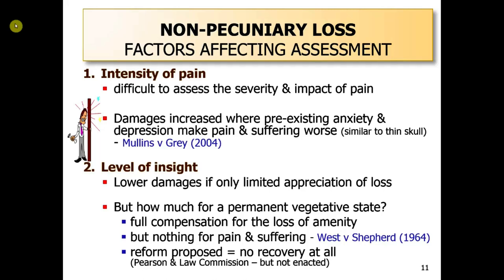The House of Lords in West v Shepherd was a classic compromise case. They said he should get money for the loss of amenity — he should get money because he can no longer do things with his legs — but he shouldn't get anything for the pain. The Law Commission and Pearson said in the past that PVS claimants shouldn't get any money at all, but that's never been enacted. They still get money under the rule of West v Shepherd — for non-pecuniary loss, but not for the pain, for the loss of amenity.